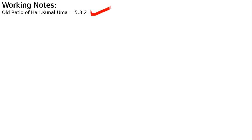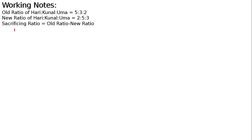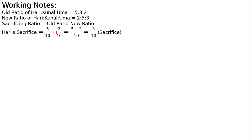Now we will start with the working notes. First, the goodwill of the firm is valued at 3,00,000. Working note: old ratio of Hari, Kunal, Uma is 5:3:2. The new ratio of Hari, Kunal, Uma is 2:5:3. Sacrificing ratio = old ratio minus new ratio. Hari's sacrifice = 5/10 − 2/10 = 3/10.